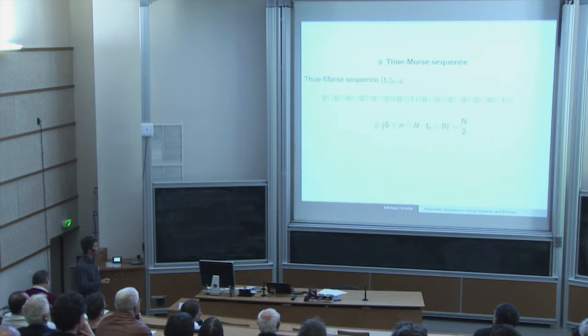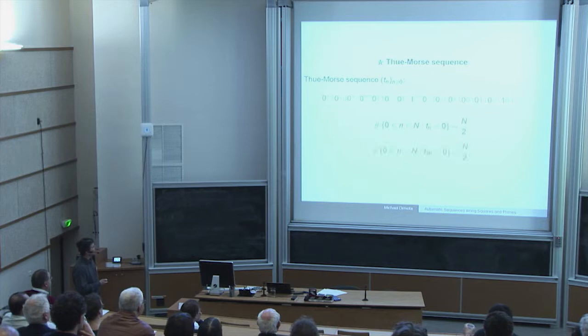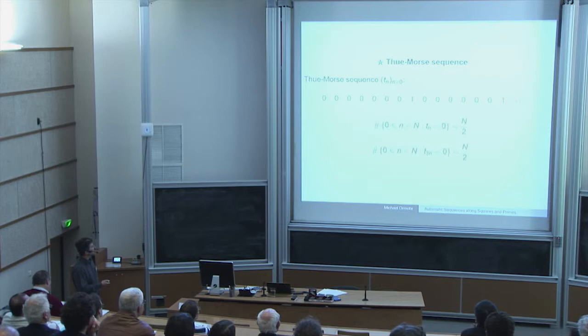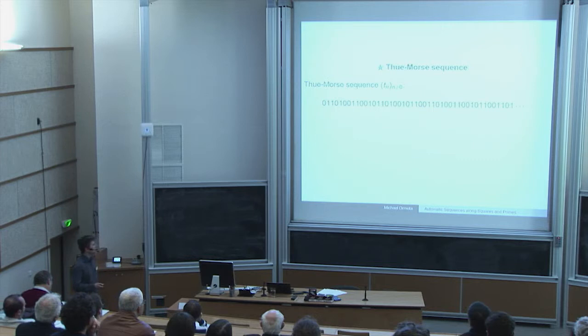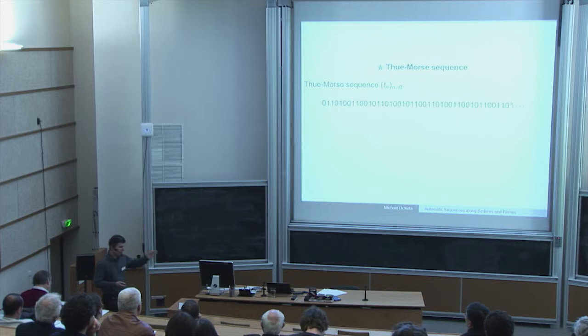It gets more interesting if you consider subsequences. For example, taking the linear subsequence of multiples of three, the same result holds — if you consider any linear subsequence of the Thue-Morse sequence, the asymptotic frequency of zeros and ones is again one half, so it is again uniformly distributed. But linear subsequences are in some sense easy, because you again get an automatic sequence and you know something about the frequencies.